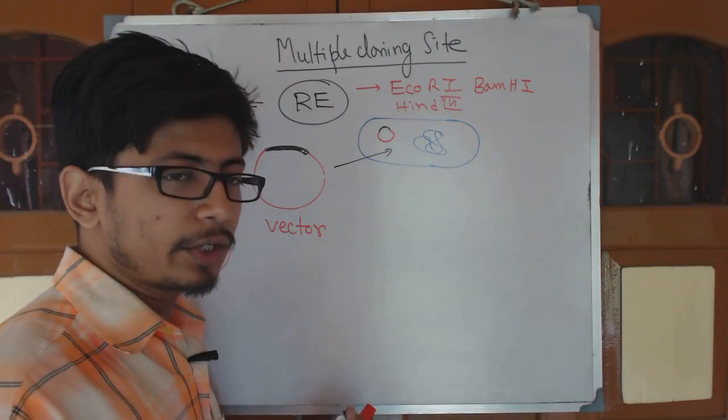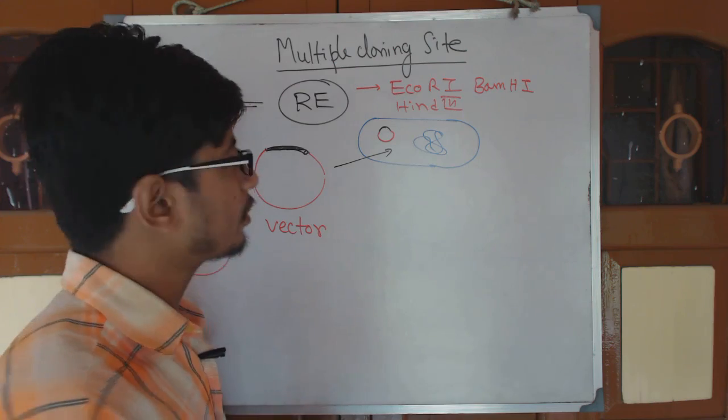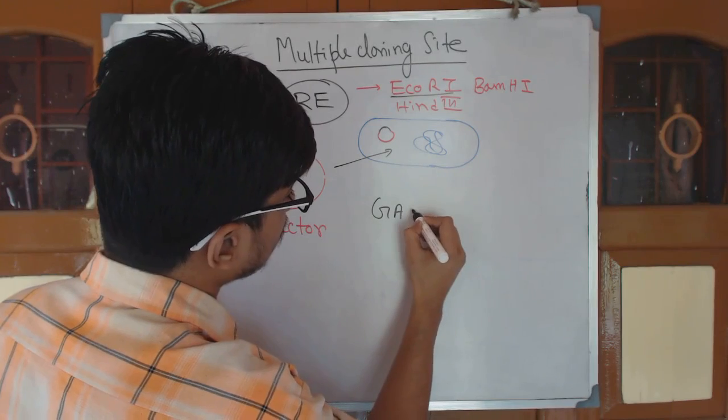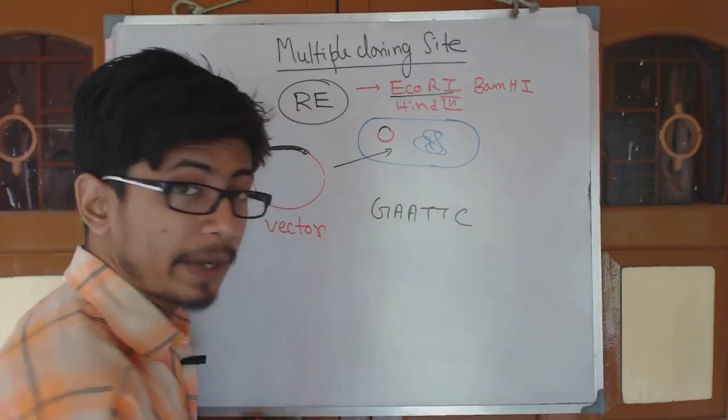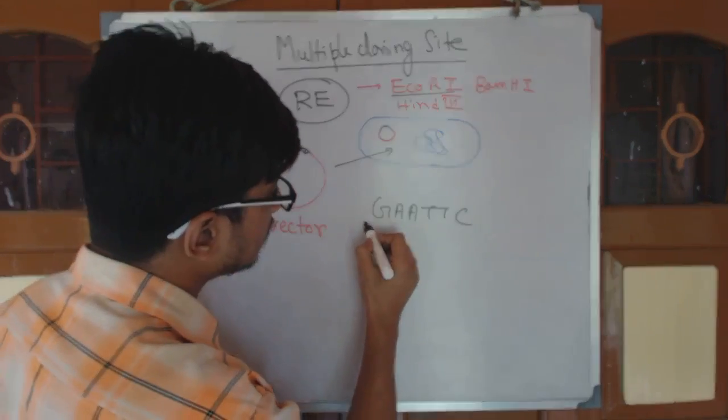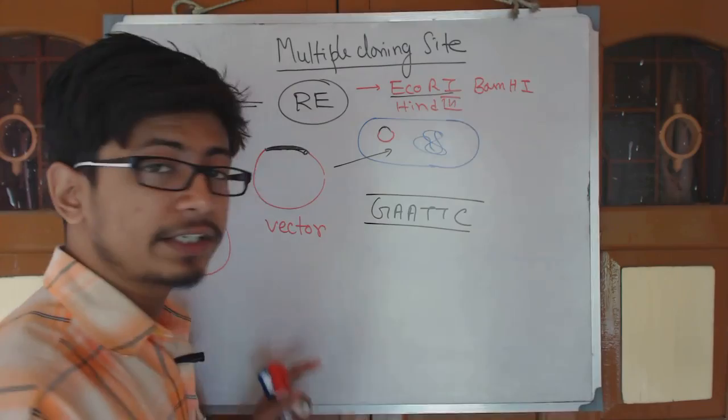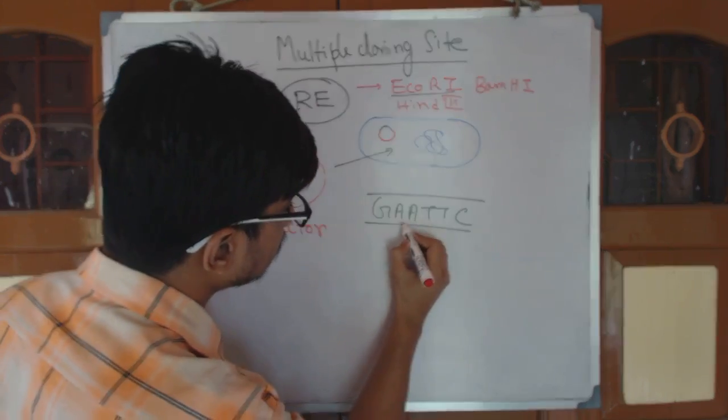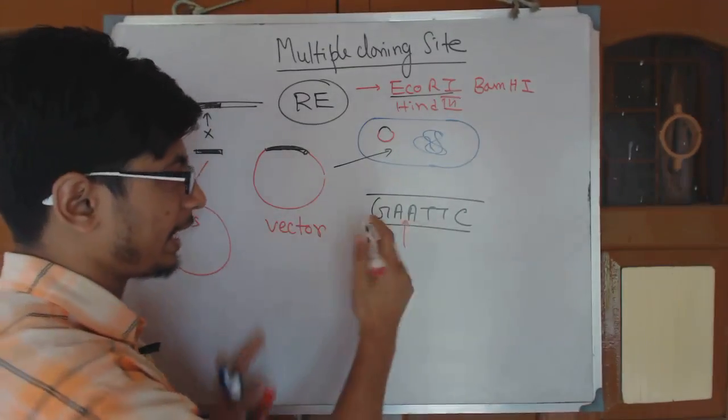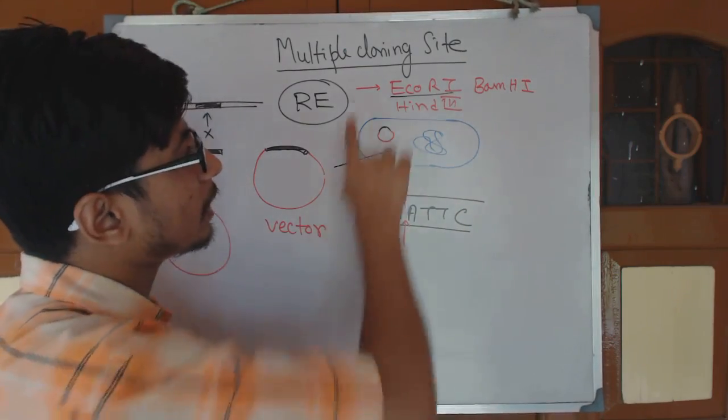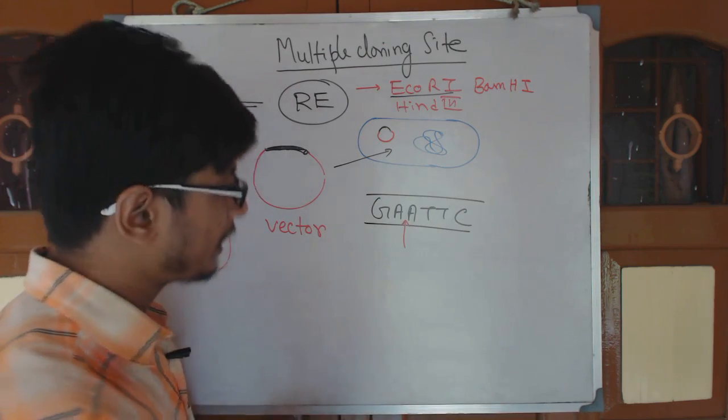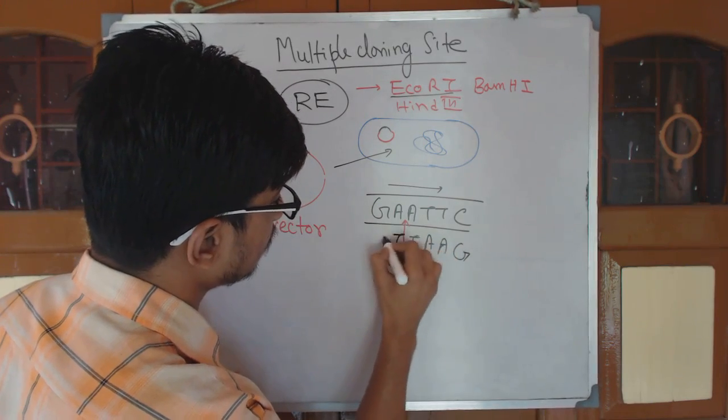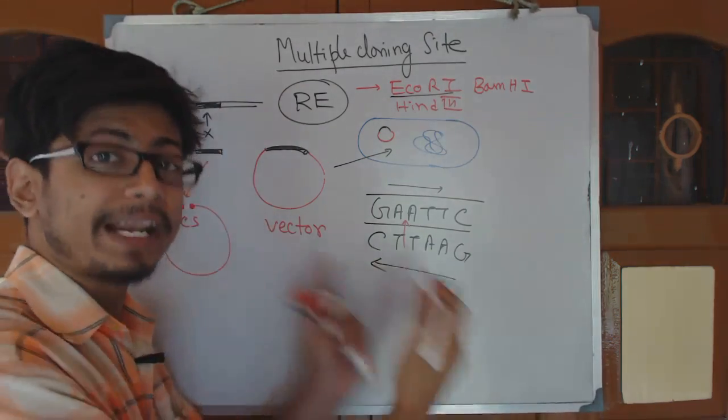ECO-R1, for example, recognizes sequence G-A-A-T-T-C. This is the ECO-R1 recognition sequence. But it will cleave only after the first A, after G-A. The sequences are palindromic in nature. G-A-A-T-T-C from this side, G-A-A-T-T-C from that side also, palindromic sequence.